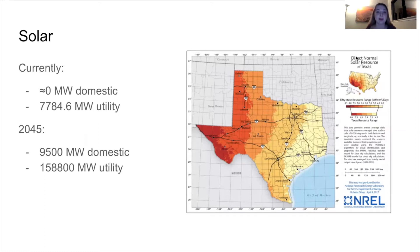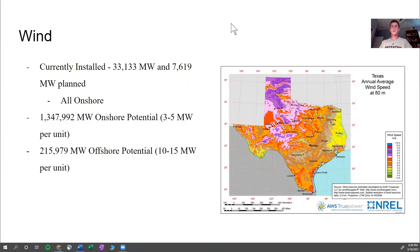The biggest setback with solar is that it's highly dependent on weather as well as the time of day. Coupled with energy storage systems that we'll be talking about later, that is where all of our potential lies for Texas.